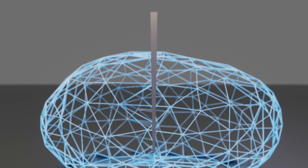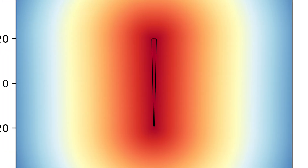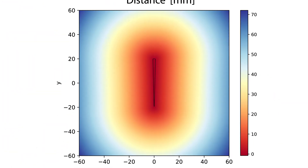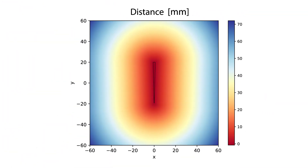We represent the geometry of the knife implicitly by a signed distance field. This representation is used to compute the penetration depth and surface normal at the places where the knife makes contact with the object.